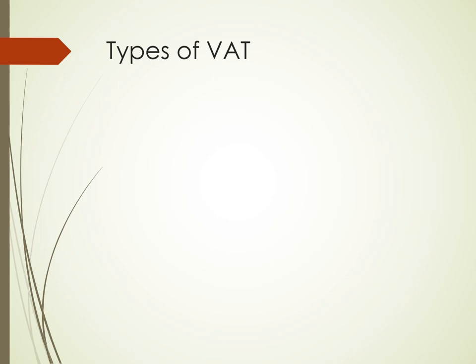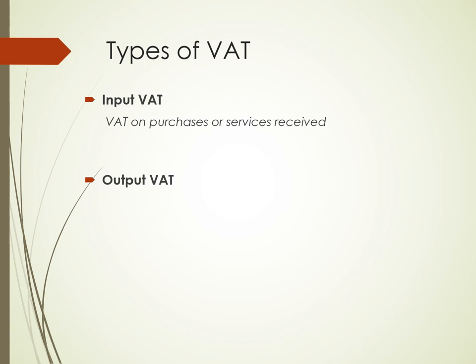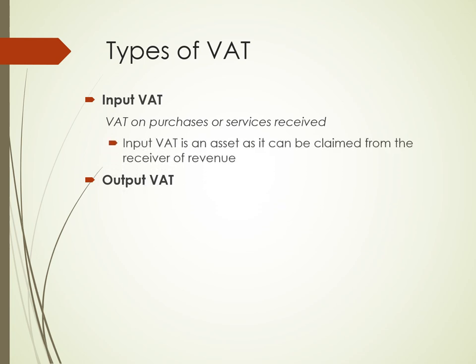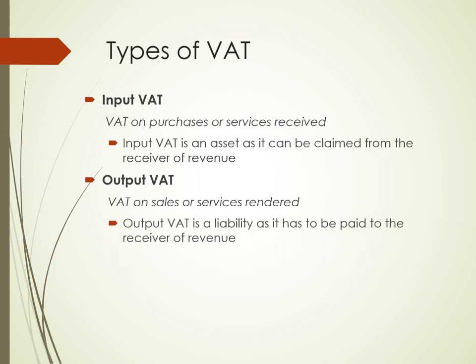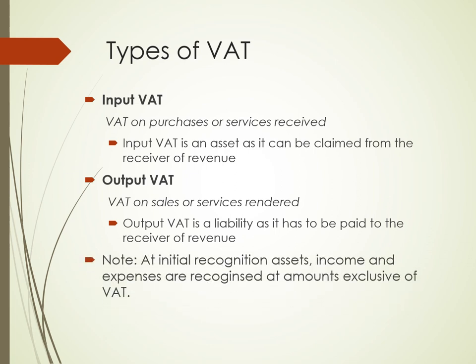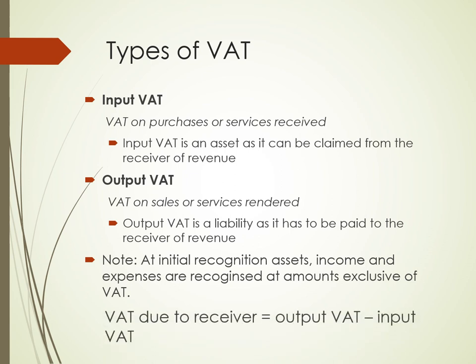Types of VAT. We have two main types of VAT: input VAT and output VAT. Input VAT is VAT on purchases or services received. Input VAT is an asset for the business and it can be claimed back from the receiver of revenue. Output VAT is VAT on sales or services rendered. Output VAT is a liability for the business and it has to be paid to the receiver of revenue. At initial recognition, all assets, income and expenses are recognized at amounts exclusive of VAT. The VAT amount due to the receiver of revenue is the difference between output VAT and input VAT.